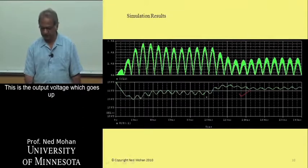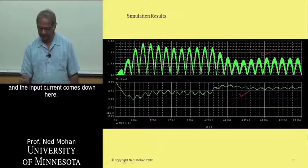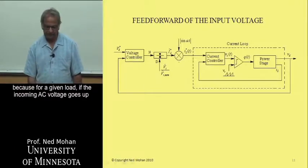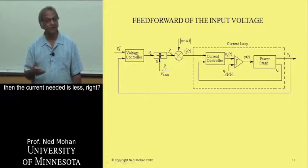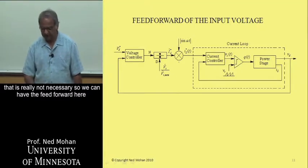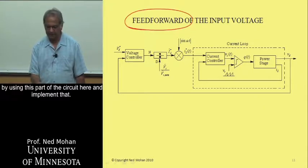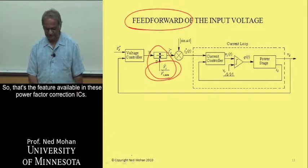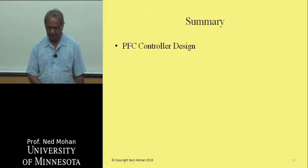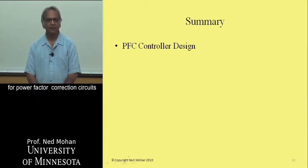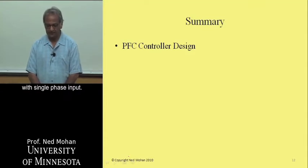The output voltage rises when the output load goes down, and the input current decreases accordingly. We can also feed-forward the input voltage: for a given load, if the incoming AC voltage goes up, less current is needed. That information does not need to trickle slowly through the output loop; we can implement feed-forward using a dedicated part of the circuit. This feature is available in power factor correction ICs. This brings us to the summary: we have looked at the design of the controller for power factor correction circuits with single-phase input.